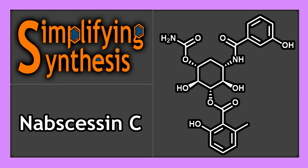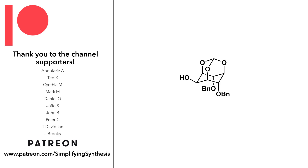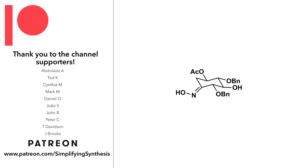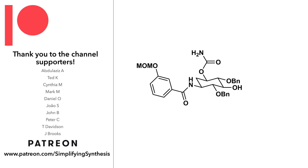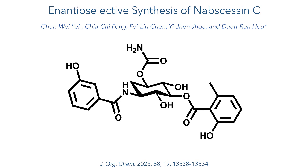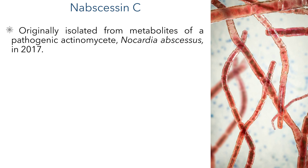Welcome back to Simplifying Synthesis. In this video, we are going to look at the total synthesis of nabscessin C. This work was published in J. Org. Chem. by the group of Duen-Ren Hou. Nabscessin C was originally isolated from metabolites of a pathogenic actinomycete, Nocardia abscessus, in 2017.